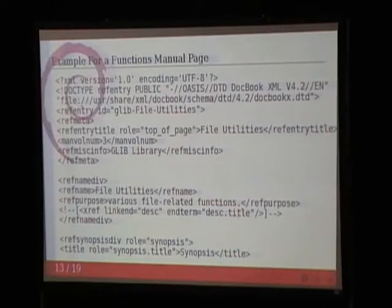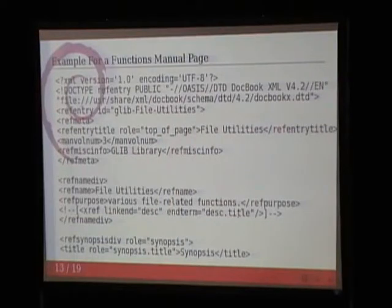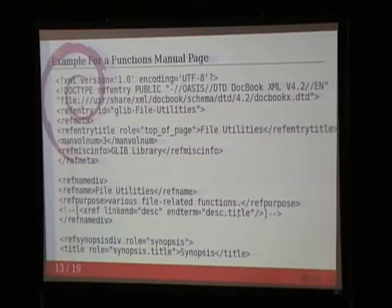You can have also man pages for function references, but I don't show this now. If you want to really go into the matter, look for example at the documentation of GLib, the library under the hood of the GTK toolkit. All functions there are described in DocBook XML, and you can easily look at how they do these things.